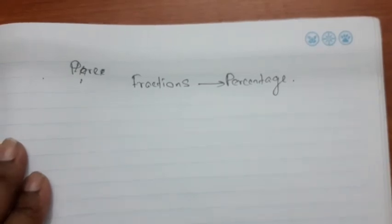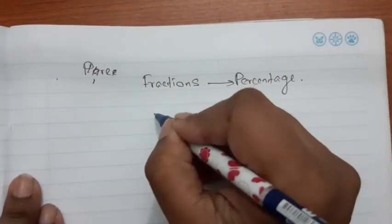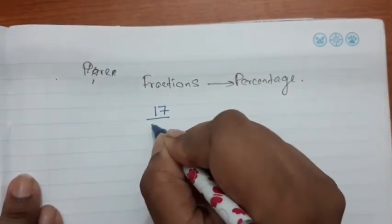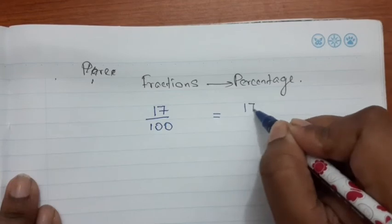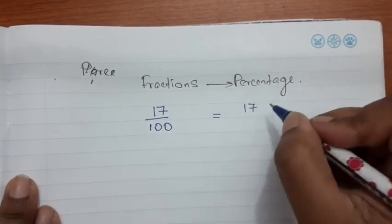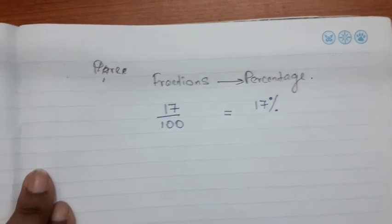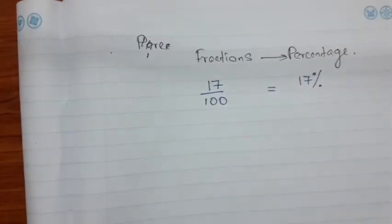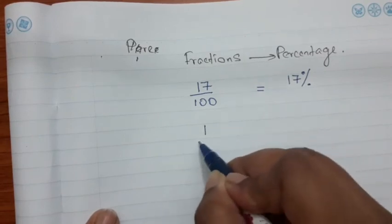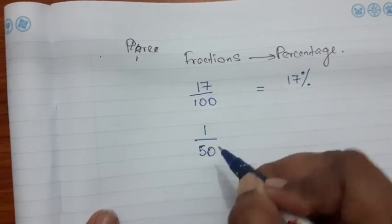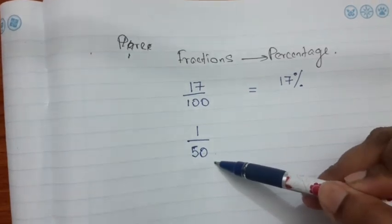Now let's move on to the second topic: converting a fraction to a percentage. If a fraction is already written out of 100, you can easily convert it by simply replacing the denominator with the percentage sign. But what if the denominator is not 100? Let's take the example of 1 over 50.